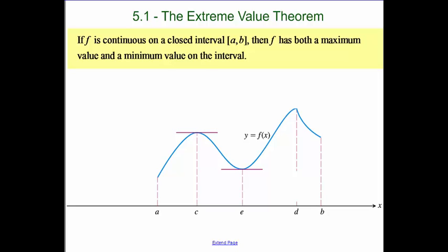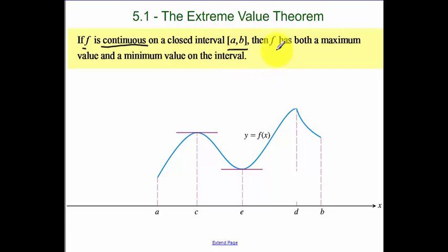Today we're going to be talking about the Extreme Value Theorem. The Extreme Value Theorem states that if your function is continuous — that's a key word — on a closed interval, so I restrict my graph with endpoints, your function has to have both a maximum and a minimum value. So let's look a little bit at this.